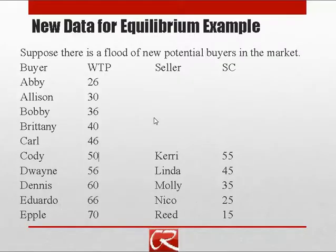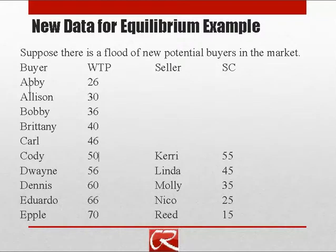I'm going to bring back some of the buyer and seller data that we had, and we're going to add a whole lot of new buyers to our market. Initially, we just had Allison, Brittany, Cody, Dennis, and Epple, but I'm going to add a new buyer at all the different price levels and willingness to pay. We're going to keep the sellers the same, so we're going to have more buyers, and we're going to have a shift in the position of the demand curve because of that.